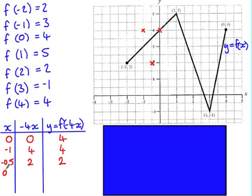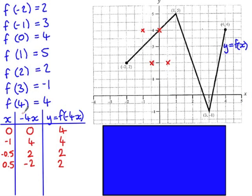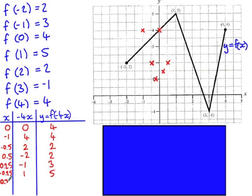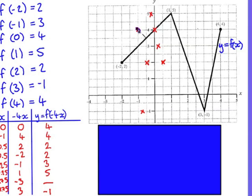For x equals positive 0.5: negative 4 times 0.5 is negative 2, and f of negative 2 is 2, so when x is 0.5, the value of the transformed function is 2. I'll also plot x equals 0.25, negative 0.25, 0.75, and negative 0.75. Note that negative 3 isn't in the original domain, so x equals 0.75 gives an endpoint. f of 3 is negative 1, so we've found an endpoint of the function.